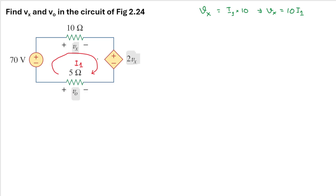We can also get V0. Here the current is flowing from the negative terminal to the positive terminal, so our sign will be negative. The resistance is 5 ohms, so V0 equals minus 5·i1.